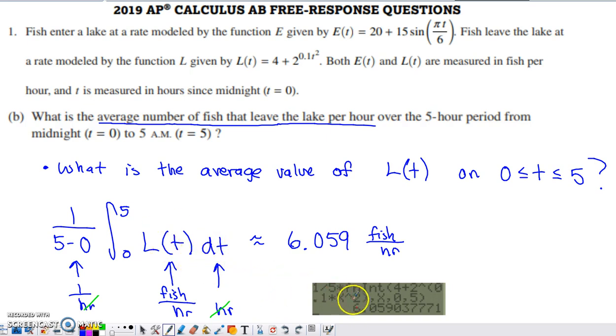Once again, calculator's in play. You can toss that in. You see my TI-83 input here, and you end up with 6.059 fish per hour. Didn't say anything about rounding to the nearest whole number here. So we would want to go with the AP standard of going three digits beyond the decimal before we cut anything off or round anything off.